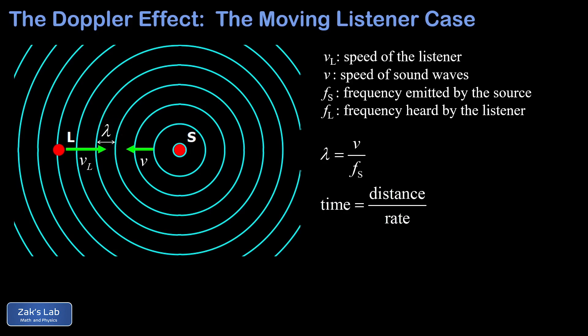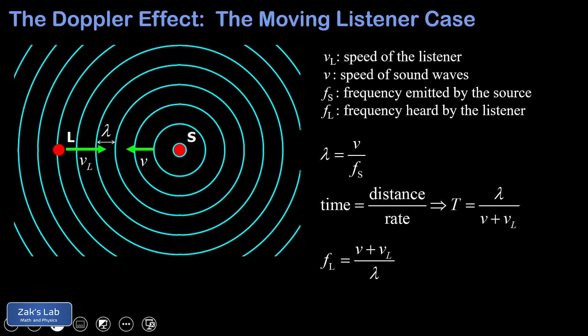The distance between two wave crests is lambda, the wavelength of the wave. Because the listener is headed at the sound waves, the relative velocity is V plus VL. So we write the period between hitting wave crests as T equals lambda divided by V plus VL. The frequency heard by the listener is the reciprocal of this period, so FL equals V plus VL over lambda. Finally, replacing lambda with V over FS gives us the equation for the frequency heard by a listener moving at speed VL toward the source.